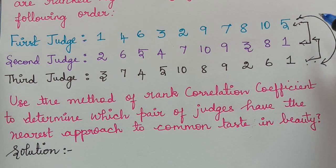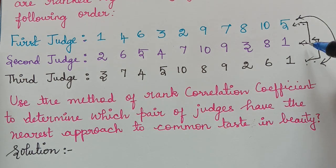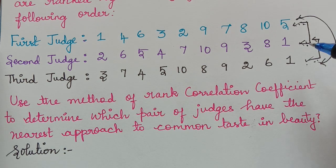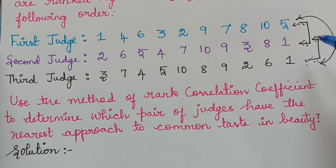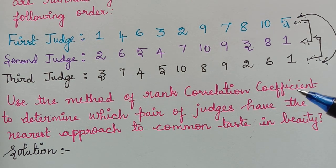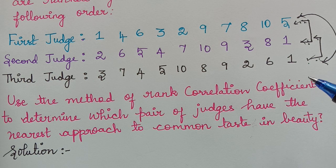In this way we will have three types of rank correlation. The value whichever is higher will give us the nearest approach to common taste in beauty among the judges. We will find rank correlation between judge 1 and judge 2, between judge 2 and judge 3, and between judge 1 and judge 3. For that we will use the Spearman rank correlation formula, which was given in our previous video.